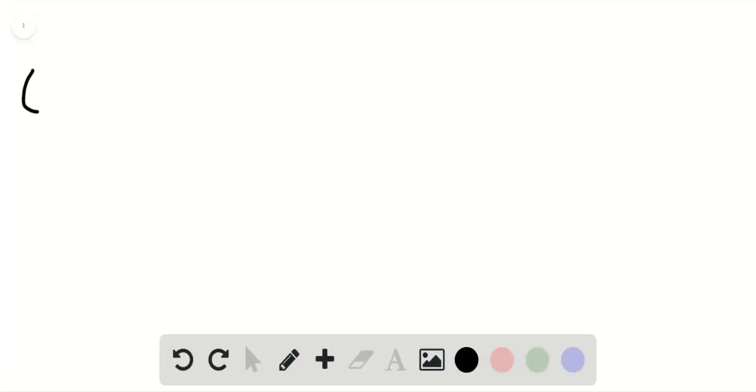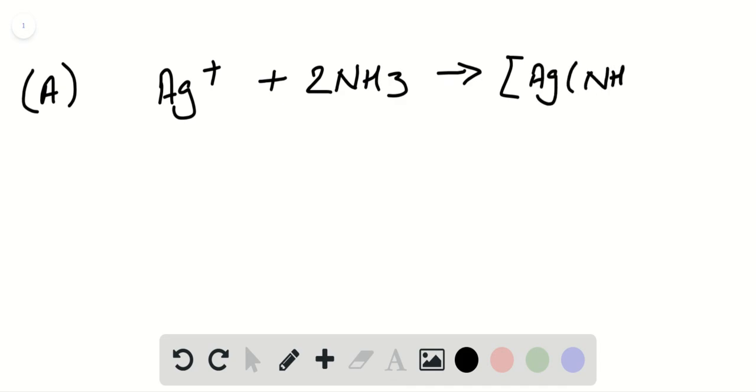This question is again exactly similar to the previous one. We have Ag+ plus 2NH3 giving us [Ag(NH3)2]+. Here the silver ion acts as Lewis acid while ammonia will act as Lewis base.